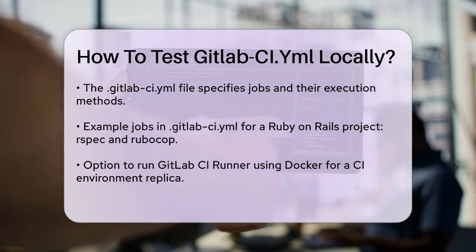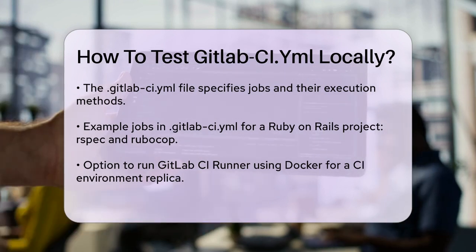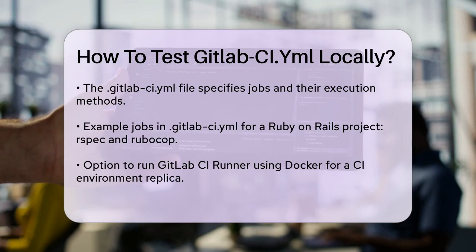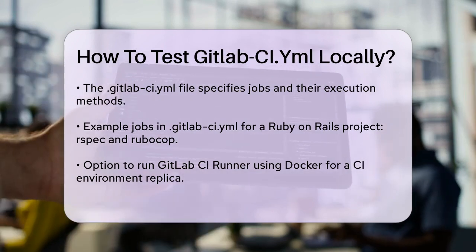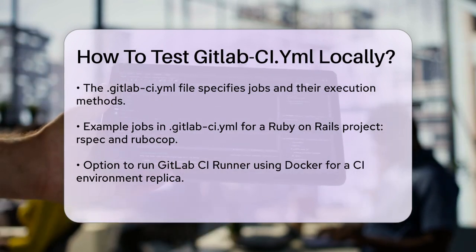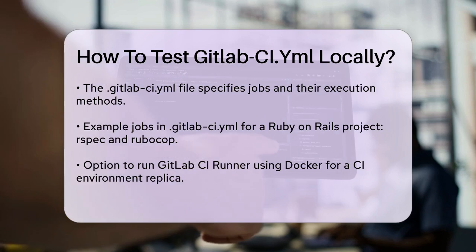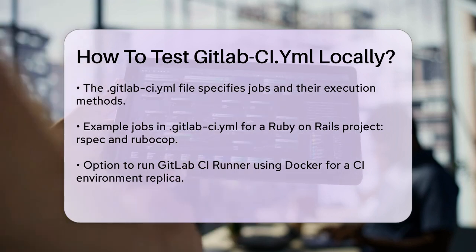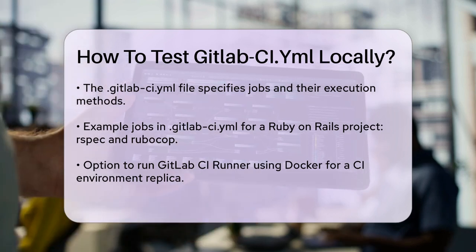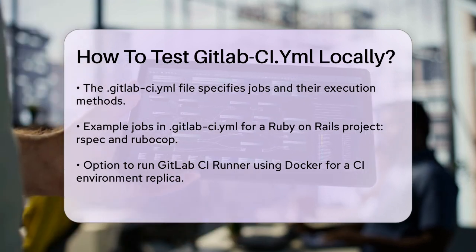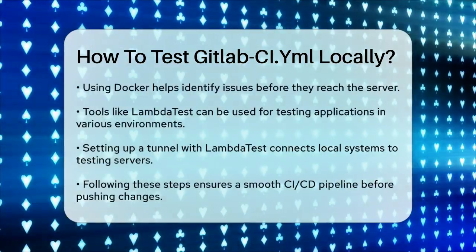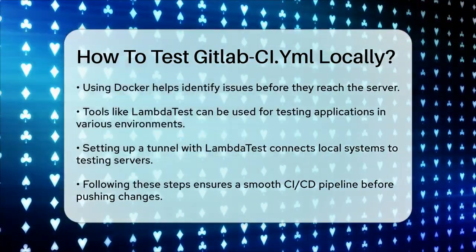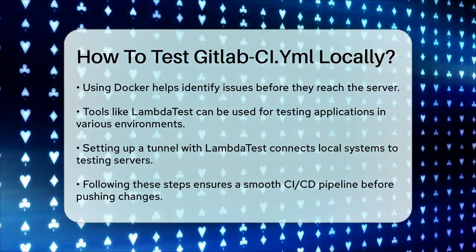To ensure your local tests mirror the CI environment, you can also run the GitLab CI Runner using Docker. This involves creating a Docker image that replicates your CI environment and running your tests within that image. This approach helps you identify and fix any issues that might arise during the CI process before they reach the server.